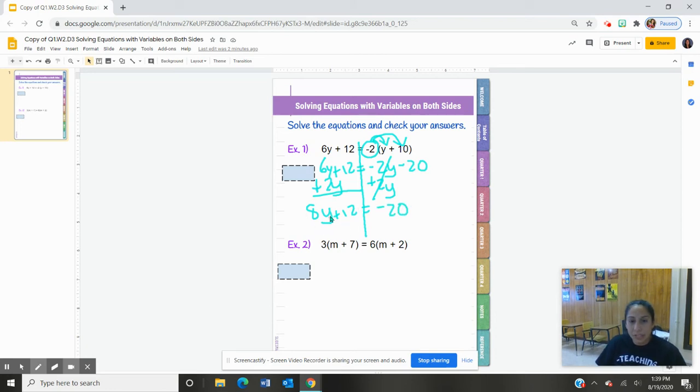And now it looks like a two-step equation. So 8y + 12 is equal to -20. The opposite of plus 12 is take away 12, so take 12 from this side. So we end up with 8y is equal to -32. Next, we're going to divide both sides by 8 because they're multiplying by 8. And we get y is equal to -4.